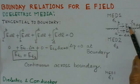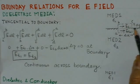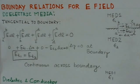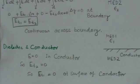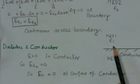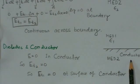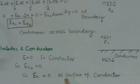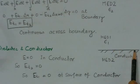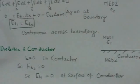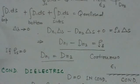This means the tangential component of the electric field is continuous at the dielectric-dielectric interface. Now, if one medium is a dielectric and the other is a conductor, the electric field inside a conductor is zero, so Et2 equals zero. Since Et1 must equal Et2, Et1 is also zero — meaning the tangential electric field at the surface of a conductor is zero.